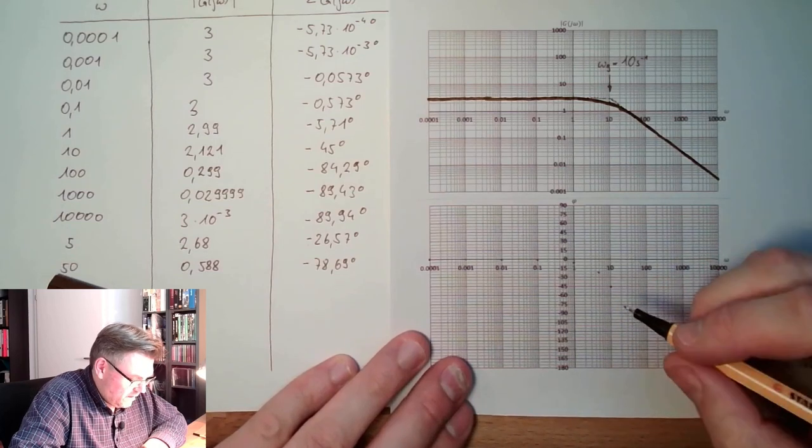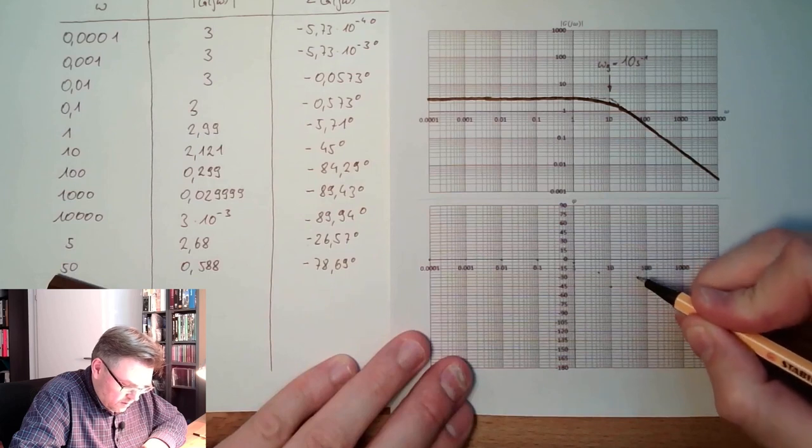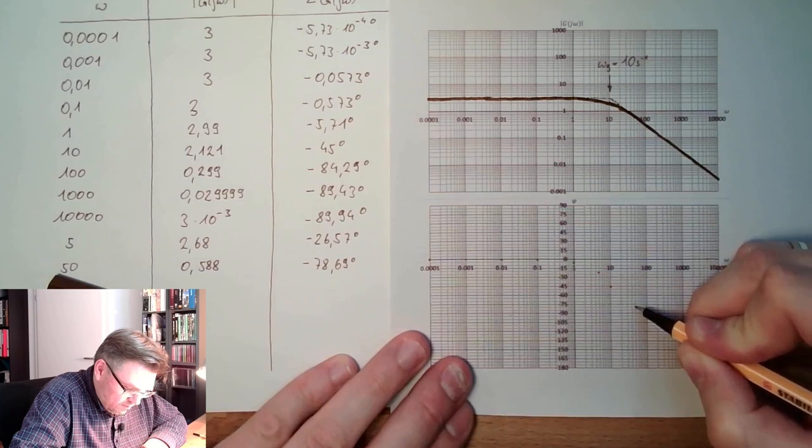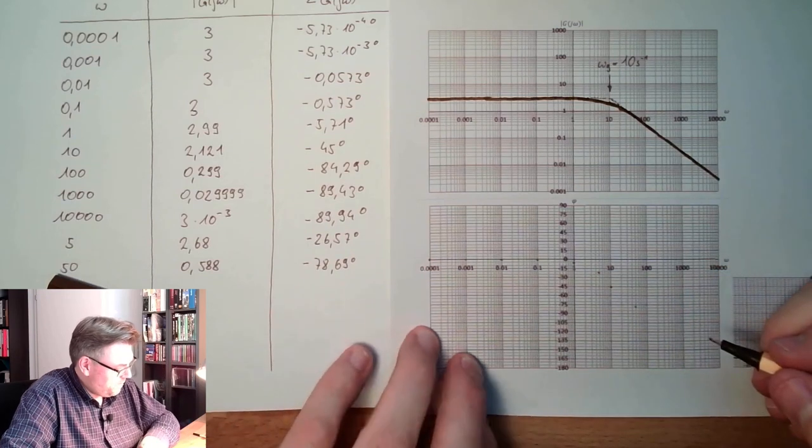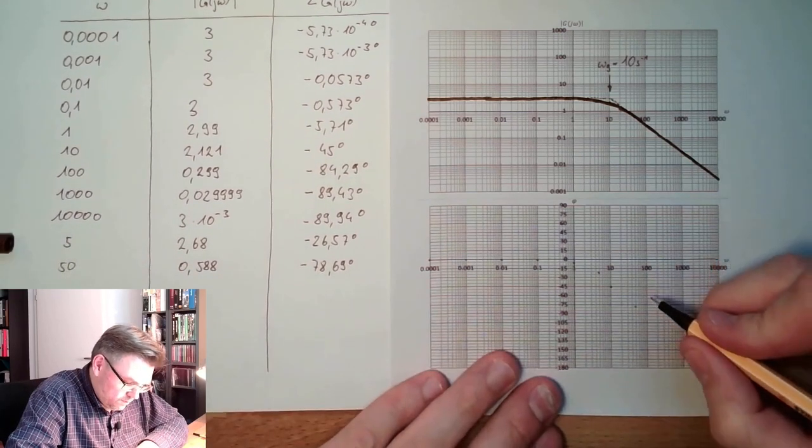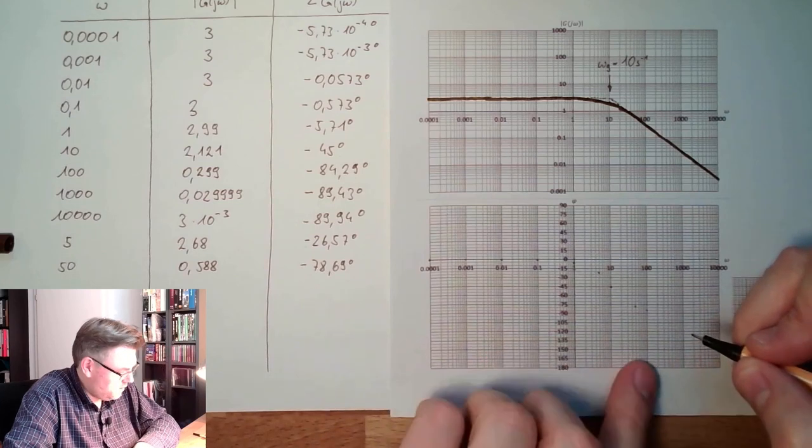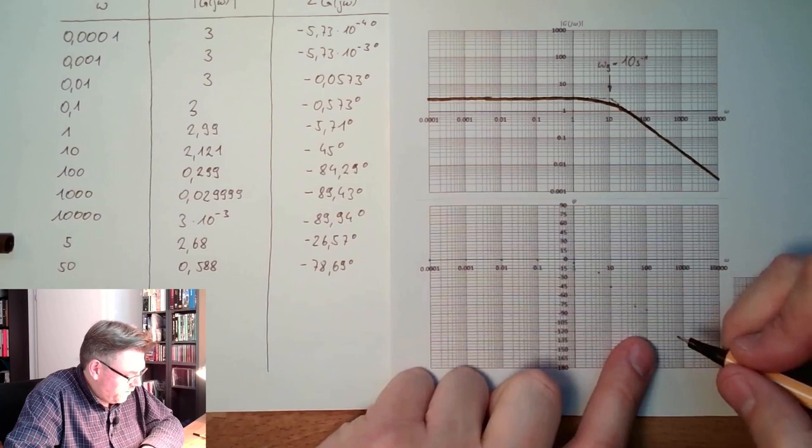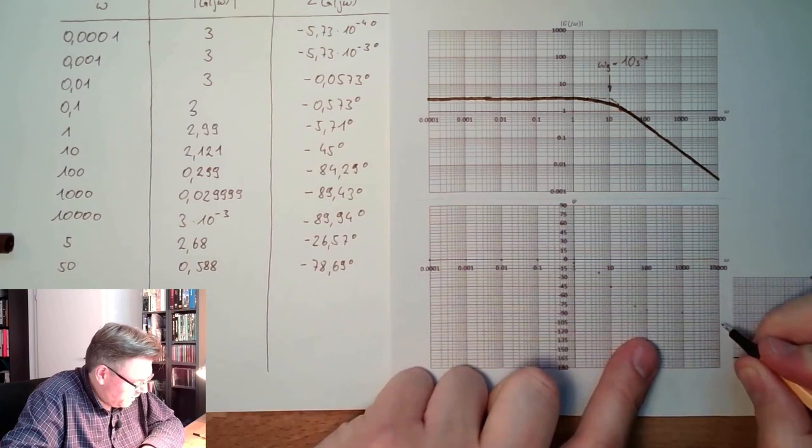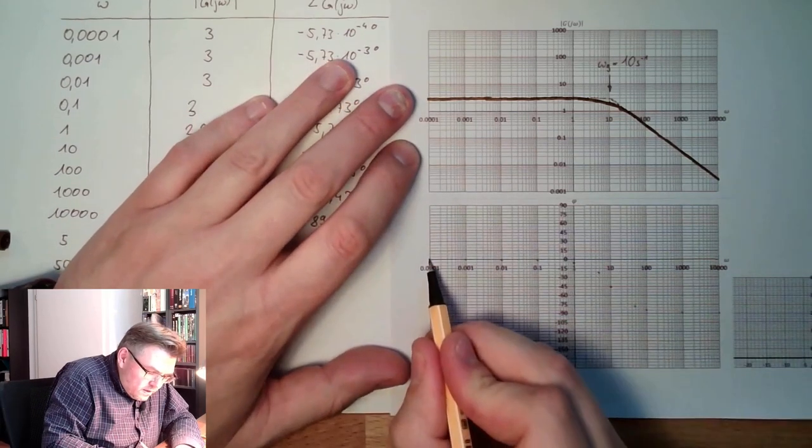At 50, we are at 78, so around here. At 100, we are at 84, so we are pretty much here. At 1,000, we are at 89. And at 10,000, we are at almost 90. So this actually is the phase.